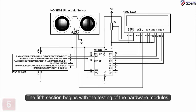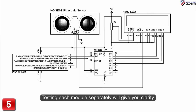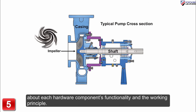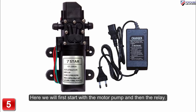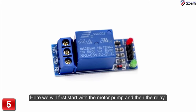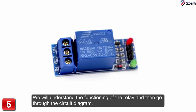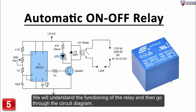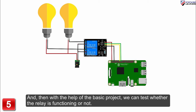The fifth section begins with the testing of the hardware modules. Testing each module separately will give you clarity about each hardware component's functionality and working principle. Here, we will first start with the motor pump and then the relay. We will understand the functioning of the relay and then go through the circuit diagram. And then with the help of the basic project, we can test whether the relay is functioning or not.